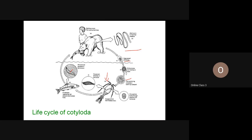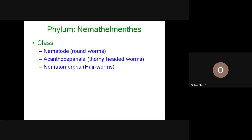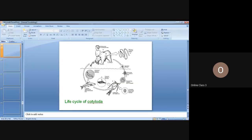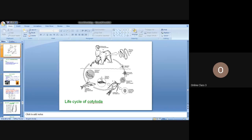Even if one proglottid detaches from the rest, there is no harm — because absorption of nutrients through the tegument is a very primitive form of nutrition. With that, we complete the general description of Platyhelminthes.